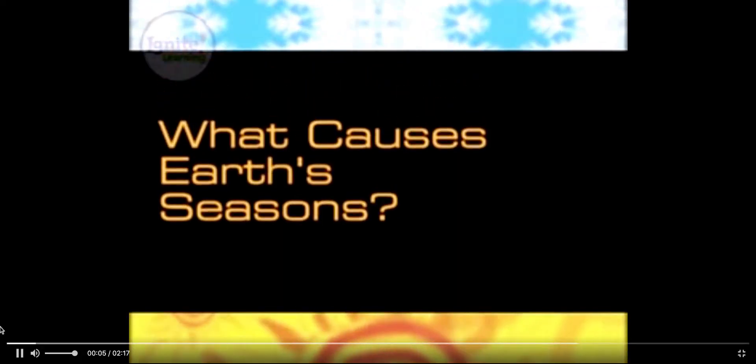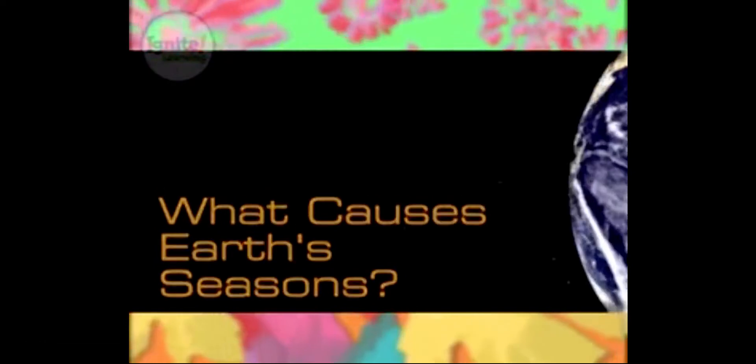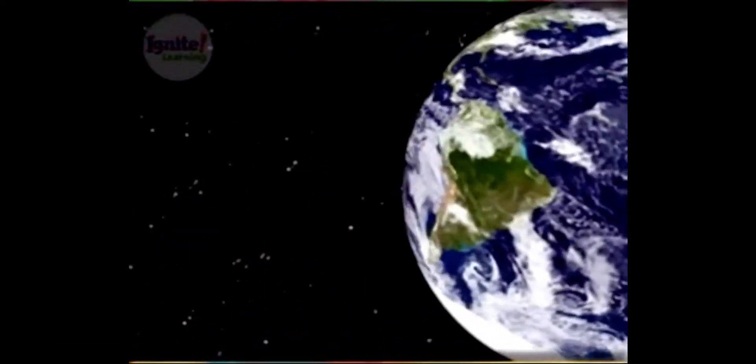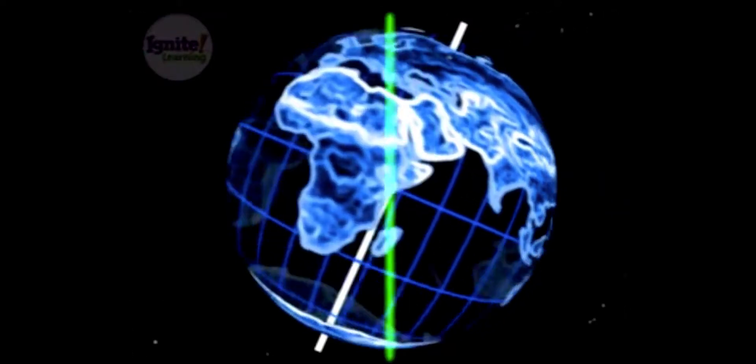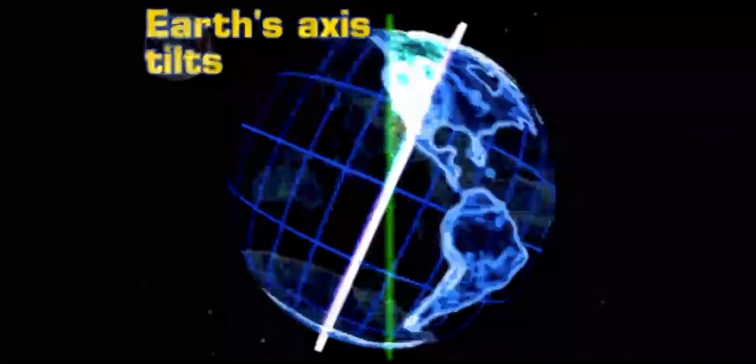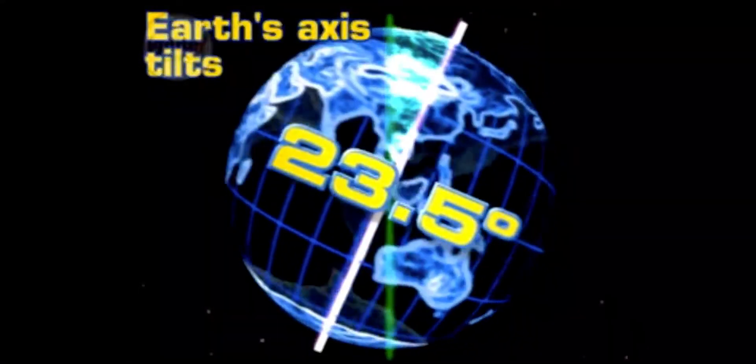What causes Earth's seasons? Earth's seasons are caused by Earth's tilt on its axis. Instead of going straight up and down, Earth's axis tilts 23.5 degrees.